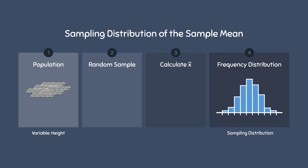And the interesting part is, if you have enough data, the sampling distribution will be normally distributed. This is due to the central limit theorem, but we will save the discussion for this topic in the next video.